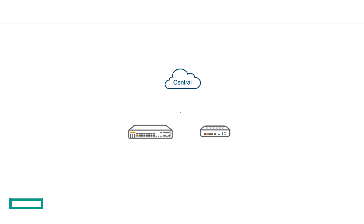On our whiteboard here, we have an Aruba Central icon and we have two gateways. Before we speak about zero-touch provisioning or one-touch provisioning, we want to make sure that we have alignment as to where your final configuration comes from. Your final configuration is going to come from Aruba Central, regardless of if you're using one-touch provisioning or zero-touch provisioning. Zero-touch provisioning generally means that you plug the device into an internet router that has access to the internet, you get the DHCP address, it grabs its configuration from Aruba Central, and it goes.